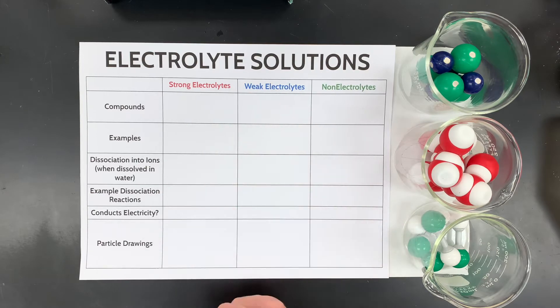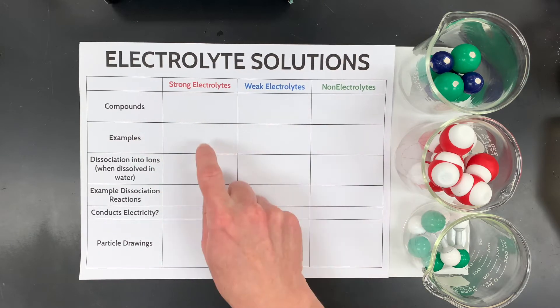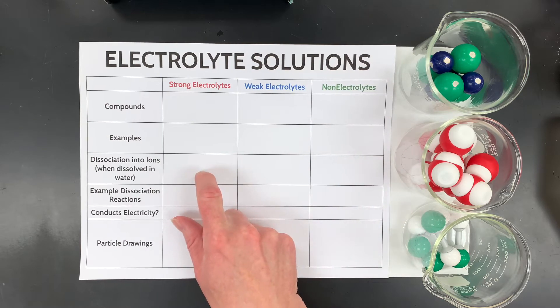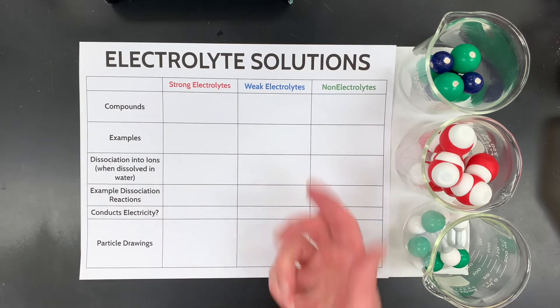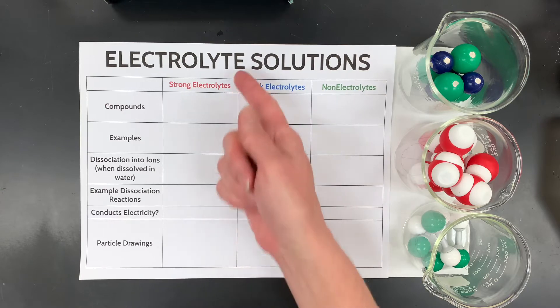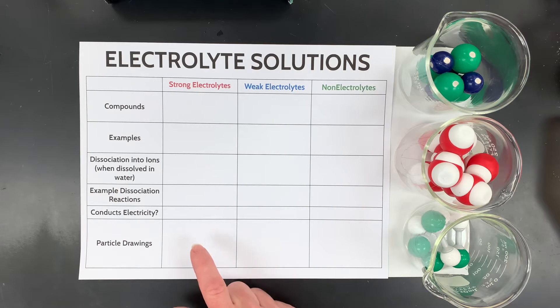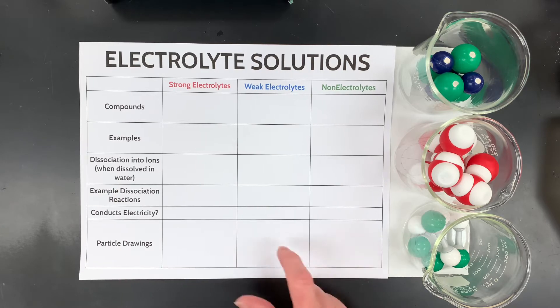If you'd like a copy of this table, go to the description of this YouTube video below and print out those solution notes that go with all the solution videos I have on my YouTube channel. So what we're going to do is talk about what compounds in general are each of these categories, some specific examples, a generic dissociation into ions if they do make ions, some examples of those dissociation reactions if they conduct electricity, which is the biggest thing about electrolytes as they do conduct electricity and non-electrolytes do not, and we'll also have some particle drawings.